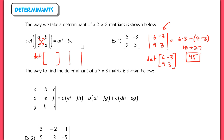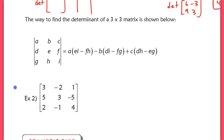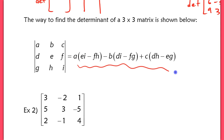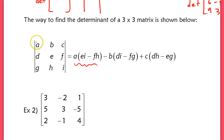Now, to find the determinant of a 3x3 matrix, it looks a little more complicated. We've got all the letters written in here. Essentially, if you look at the A row and column and cross that out, you take A and multiply it by the determinant of the leftover 2x2 matrix.